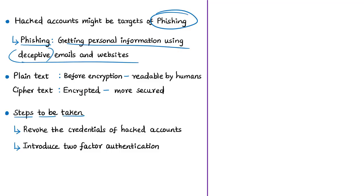When passwords of hacked accounts are available in plain text on the dark web, it means passwords are visible and readable — not encrypted — meaning the contents of these accounts, potentially including classified or secret information, are compromised. Actions to be taken include revoking lost credentials and restoring what was lost from hacked accounts. Another important step is to introduce two-factor authentication for accessing all government email accounts — even if someone knows the password, a second security code such as a one-time password via mobile phone would be required.